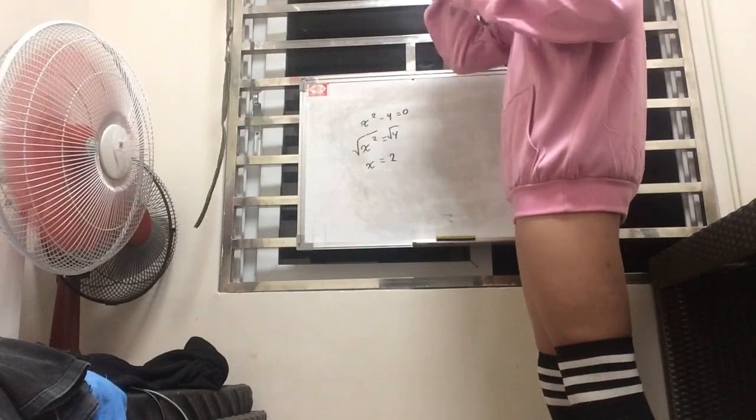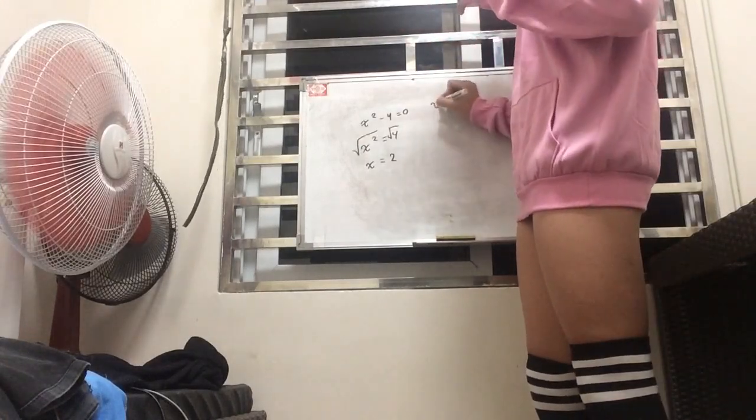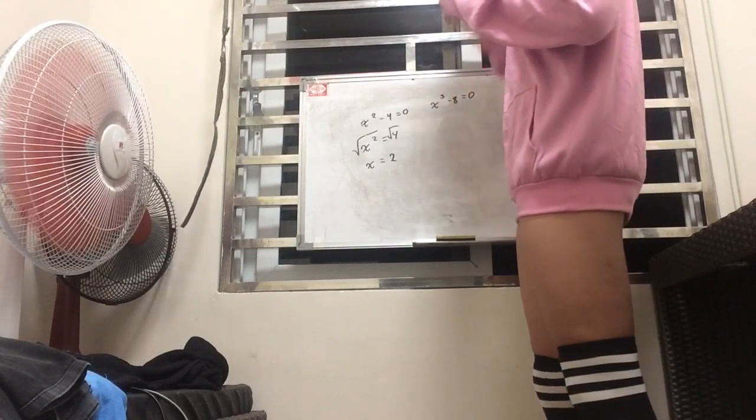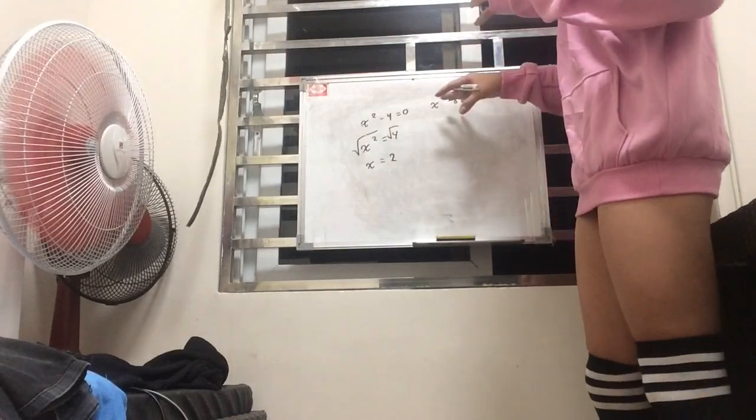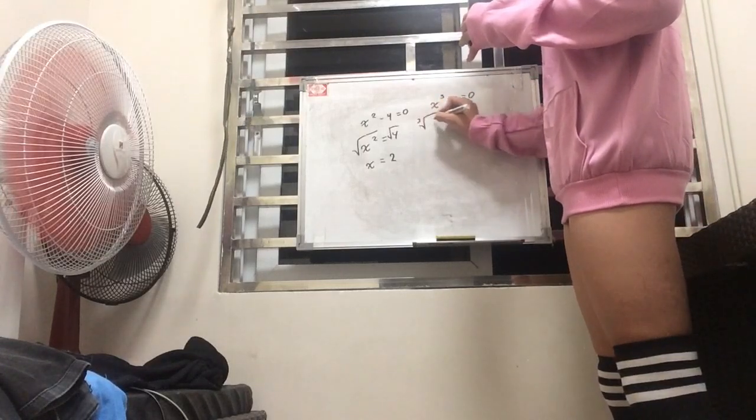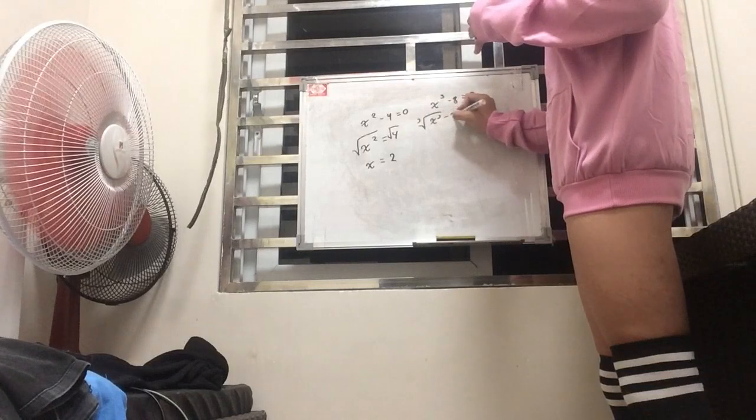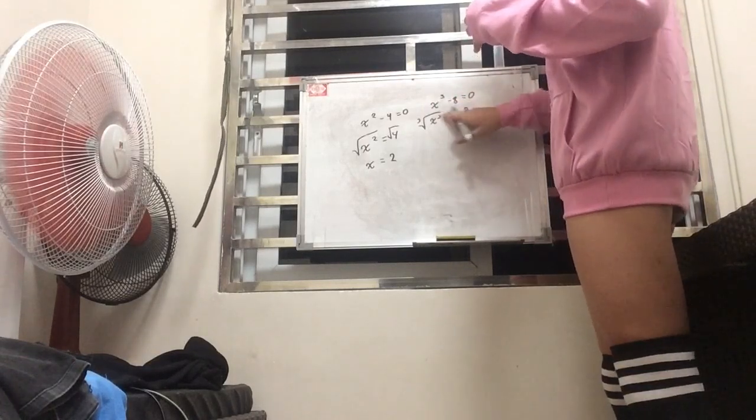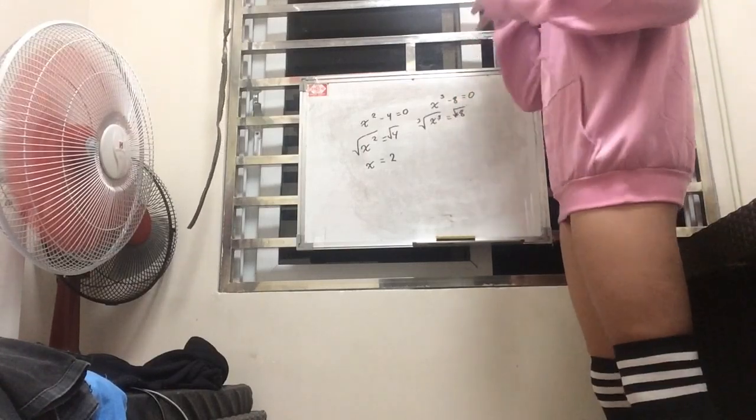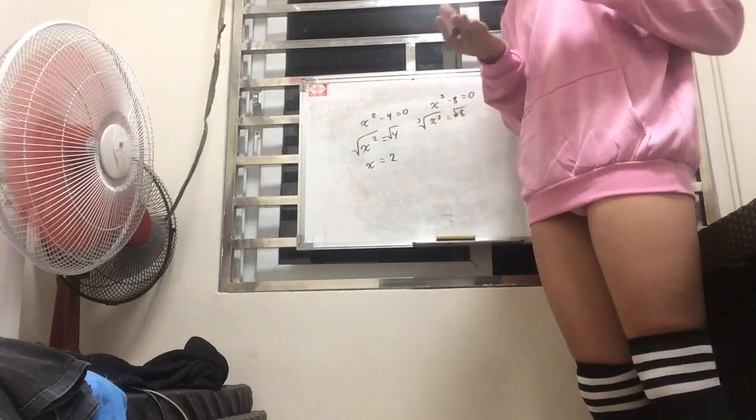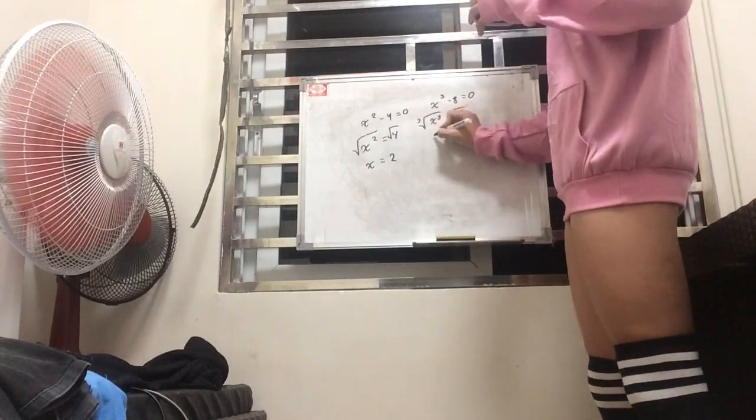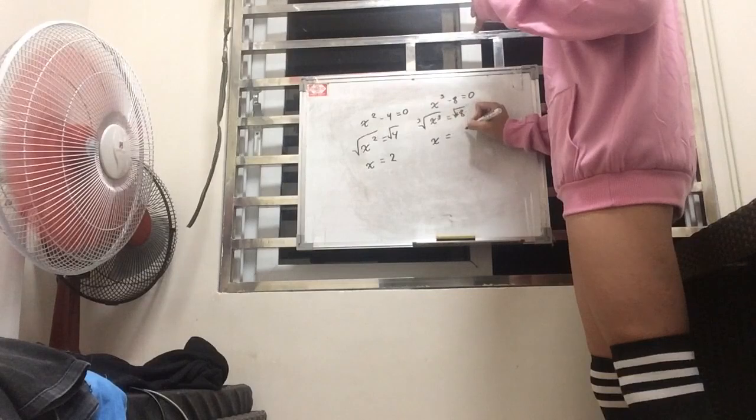So let's give an example of an nth root. Let's say we're given something like x cubed minus 8 equals 0. What do we do then? We can't just square root it, because that's not going to eliminate our cube. So what we do is find the nth root, or the cube root. We move 8 first, so it becomes positive 8. Find the cube root of both sides. As we know, the cube root of 8 is 2. Because 2 times 2 equals 4, and 4 times 2 is equal to 8.